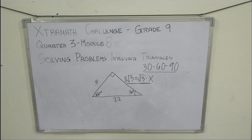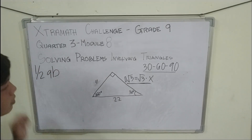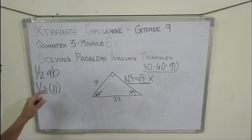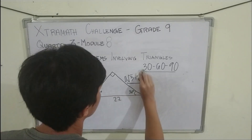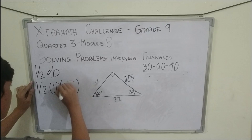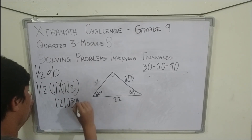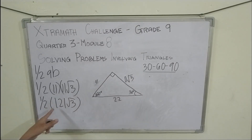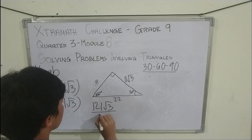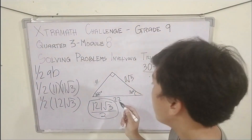To find the area, we use the formula: Area equals one half times A times B. Our A is 11 and our B is 11 square root of 3. So 11 times 11 square root of 3 equals 121 square root of 3, times one half, giving us 121 square root of 3 over 2. This is the area of the triangle.